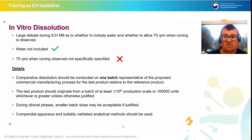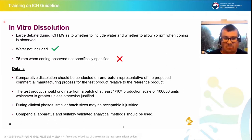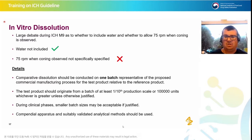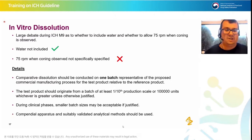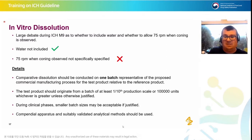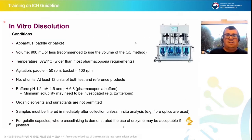The test product should originate from a batch of at least one-tenth production scale or 100,000 units, whichever is greater, unless justified otherwise. There is a comment around clinical phases where smaller batch sizes may be acceptable if justified — for example, making the switch from an early Phase 1 formulation to a Phase 2b or Phase 3 formulation where the reference batch hasn't been produced at any significant scale. Compendial apparatus should be used with suitably validated analytical methods.